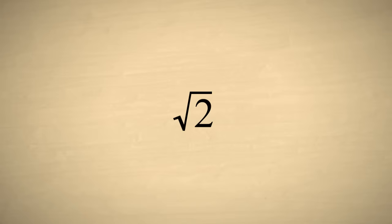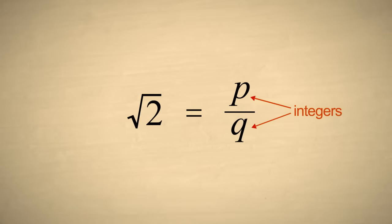Now, the definition of rational numbers says that any rational number can be represented as the ratio of two integers. In other words, one integer which we will call p divided by another which we will call q.